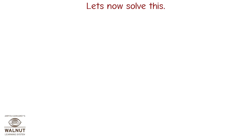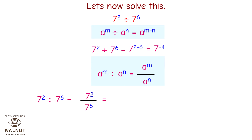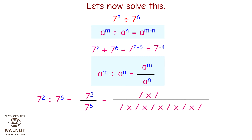Let's now solve 7 squared divided by 7 raised to 6. First, using the law of exponents a raised to m divided by a raised to n equals a raised to m minus n, we get 7 raised to 2 minus 6 equals 7 raised to minus 4. Now using the other law, 7 squared divided by 7 raised to 6 equals 7 squared upon 7 raised to 6. Writing in multiplication form: 7 times 7 divided by 7 times 7 times 7 times 7 times 7 times 7. Cancelling the 7s, we get 1 upon 7 raised to 4.